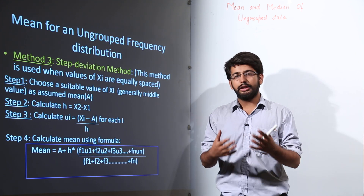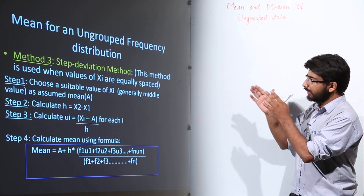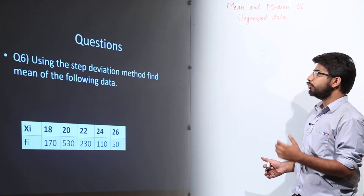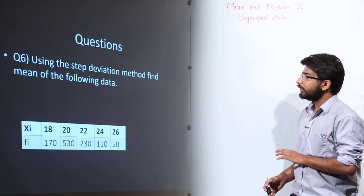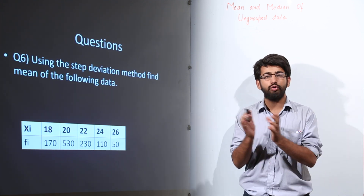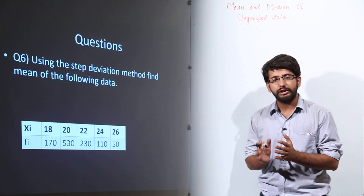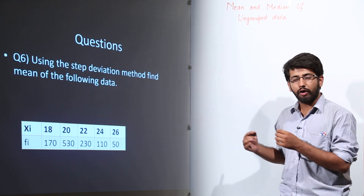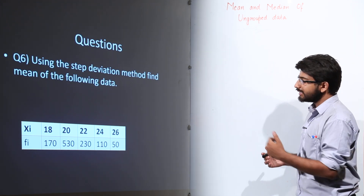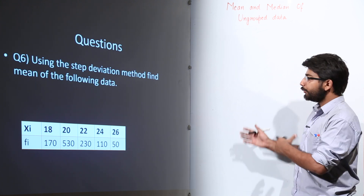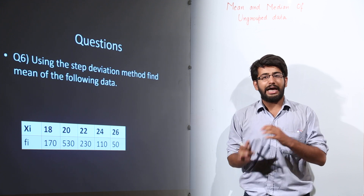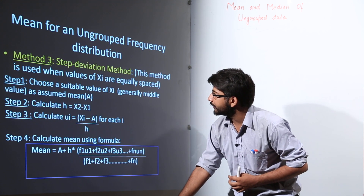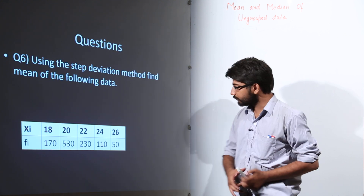We will do the next question step by step using the Step Deviation Method. This is question number 6. We can use the Step Deviation Method here because the values of XI are equally spaced — the difference between each pair of consecutive values is 2: 20−18=2, 22−20=2, 24−22=2, and 26−24=2. So H is constant.